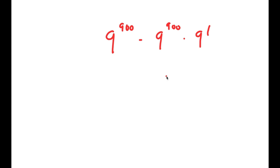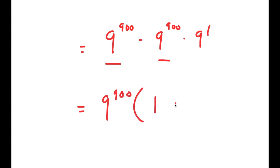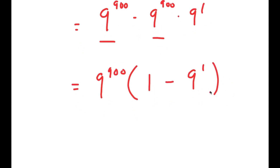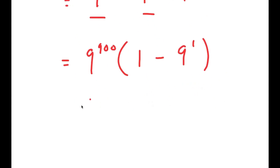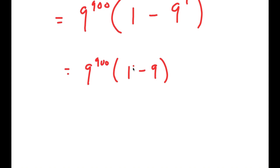Now these two terms both have 9^900 in them, so I'm going to factor out 9^900. I get 9^900 times (1 minus 9^1), which equals 9^900 times (1 minus 9). Since 1 minus 9 equals negative 8, I get 9^900 times negative 8.